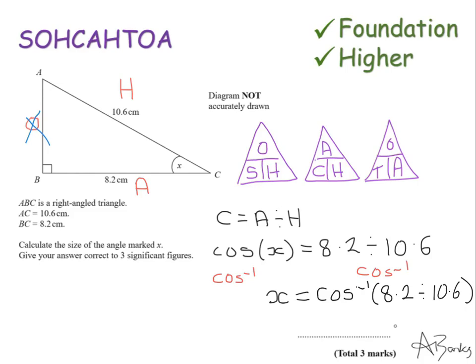When I type that in my calculator, by pressing shift and then the cos button and making sure I put 8.2 divided by 10.6 in the brackets, I get 39.323 and lots of decimal places. My question wants three significant figures. So that's going to be 39.3.